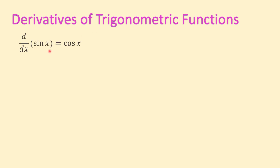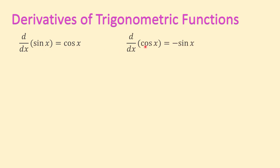The derivative of sine of x equals cosine of x, so derivative of sine is cosine. And derivative of cosine of x equals negative sine of x, so derivative of cosine is negative sine.